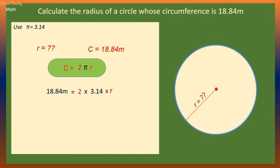Now we have 18.84 meters is equal to 2 times 3.14 times r. To find r we divide both sides by 6.28 that means r is equal to 3 meters.